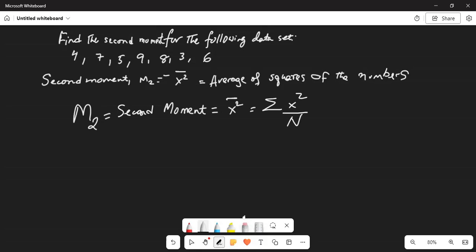So, if I correct this. So, sum of x square divided by population size. Sum of x square divided by population size.